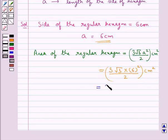This is equal to 3 into, now the value of root 3 is 1.732, into 6 square that is 36 upon 2 cm square.